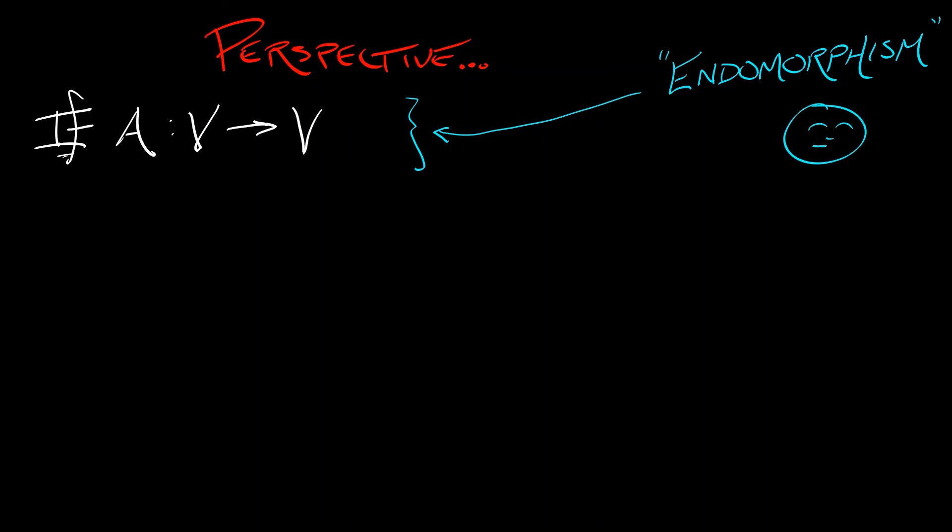Okay. Let's wrap up linear transformations with a little bit of kind of far out perspective. Most of the linear transformations that we are going to be working with from here on out are going to be of the form A has domain V and codomain also V. It takes a vector space to itself. This is a very special kind of transformation called an endomorphism. Oh my gosh, the vocabulary. This is great. I love this subject. Endomorphism. And if you find that intimidating, just think square matrix. Yeah, that'll work.